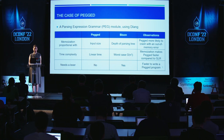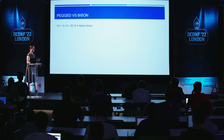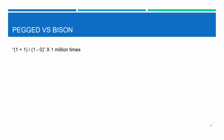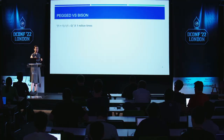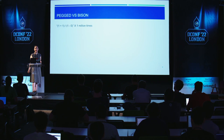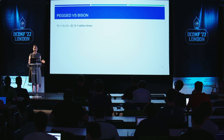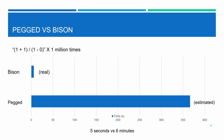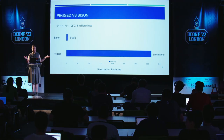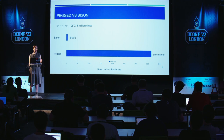Let's look at what happens when parsing an arithmetic calculator grammar with both PEGGED and Bison. I'm computing 1 plus 1 divided by 1 minus 0, parsed one million times. I chose this input size because Bison was so fast that up until this size I couldn't consistently measure anything. Bison parses it in 5 seconds; PEGGED takes 6 minutes — and that's just an estimate, because at this input size PEGGED crashes with an out-of-memory error. For grammars parseable with LALR(1), I recommend using Bison.